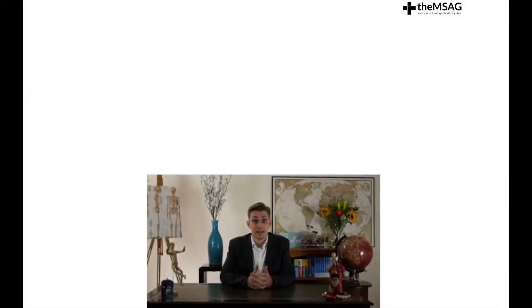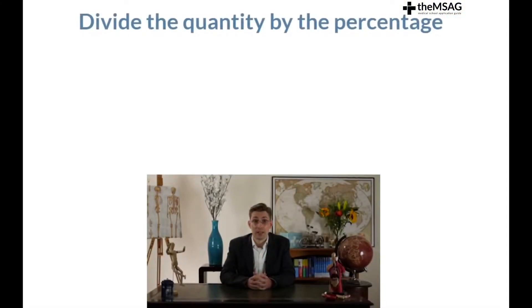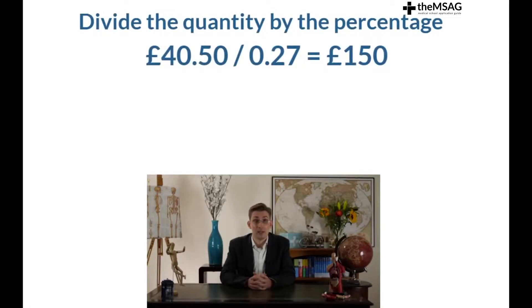The method is stunningly simple. You divide the quantity by the percentage. £40.50 divided by 0.27 equals £150. Therefore the total bill was £150.